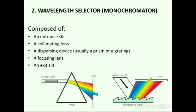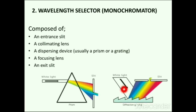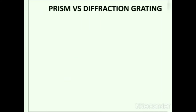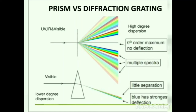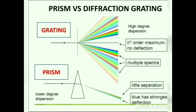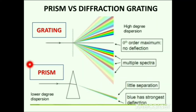There are two types of dispersing device: prism or grating. Prism is made up of glass, quartz and silica; grating is made up of aluminum. Glass is avoided in prism composition because it absorbs radiation. Prism provides a lower degree of dispersion, while grating is used when higher dispersion is required. In this picture you can observe the difference between dispersion produced by prism and grating monochromators.